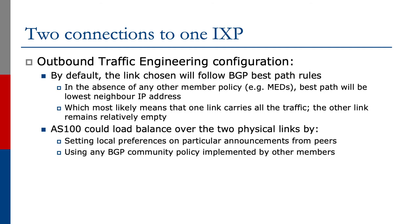Let's look at how the outbound traffic engineering would be configured. By default, the link chosen will follow BGP best path rules. In the absence of any other member policy — for example, members might send multi-exit discriminators or MEDs — the best path will basically come down to the lowest neighbor IP address on the exchange point LAN, which most likely means that one link will carry all the traffic and the other link will remain relatively empty.